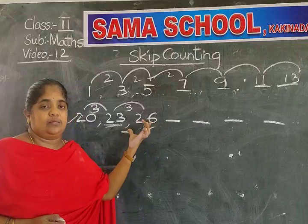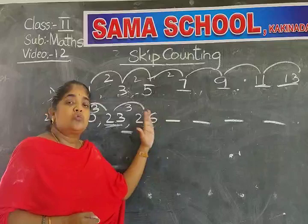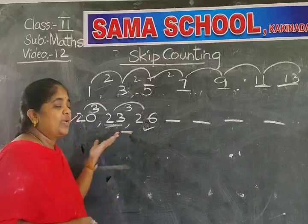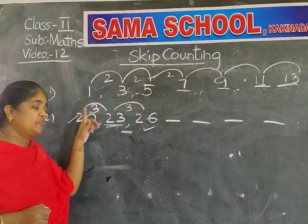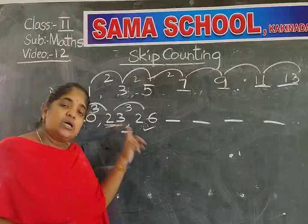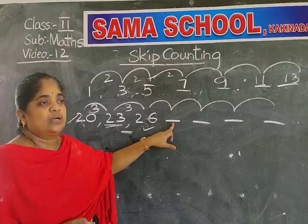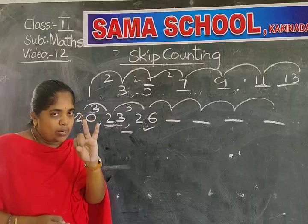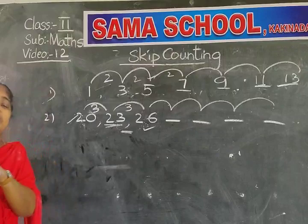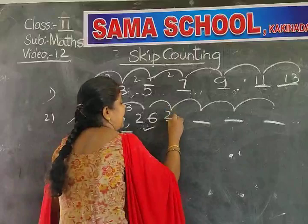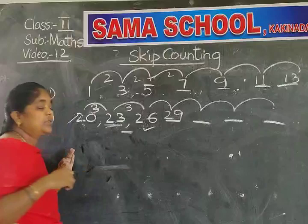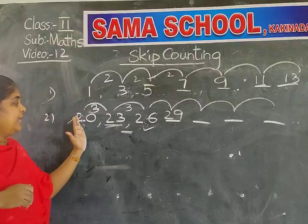20 after 23. 23 after we wrote 26. How we are completing the pattern? We are writing the third number after each number: 20 after, 23 is the third number; 23 after, 26 is the third number. Like that we will complete the remaining pattern. 26 after the third number we have to write. 26 after: 27, 28, and 29. What is the third number after 26? 29 is the third number. Observe: 20, 23, 26, 29.